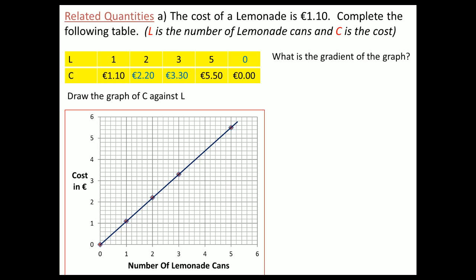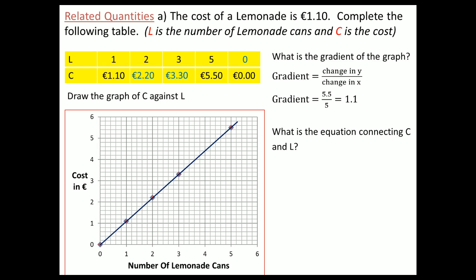This is direct proportion because as one thing gets bigger the other gets bigger at the same rate, and the graph is directly proportional if it goes through the origin. Using the gradient formula — change in y divided by change in x — the change in y is 5.5 and the change in x is 5, giving a gradient of 1.1, which is also the price of one can. The equation of the line is c = 1.1l.